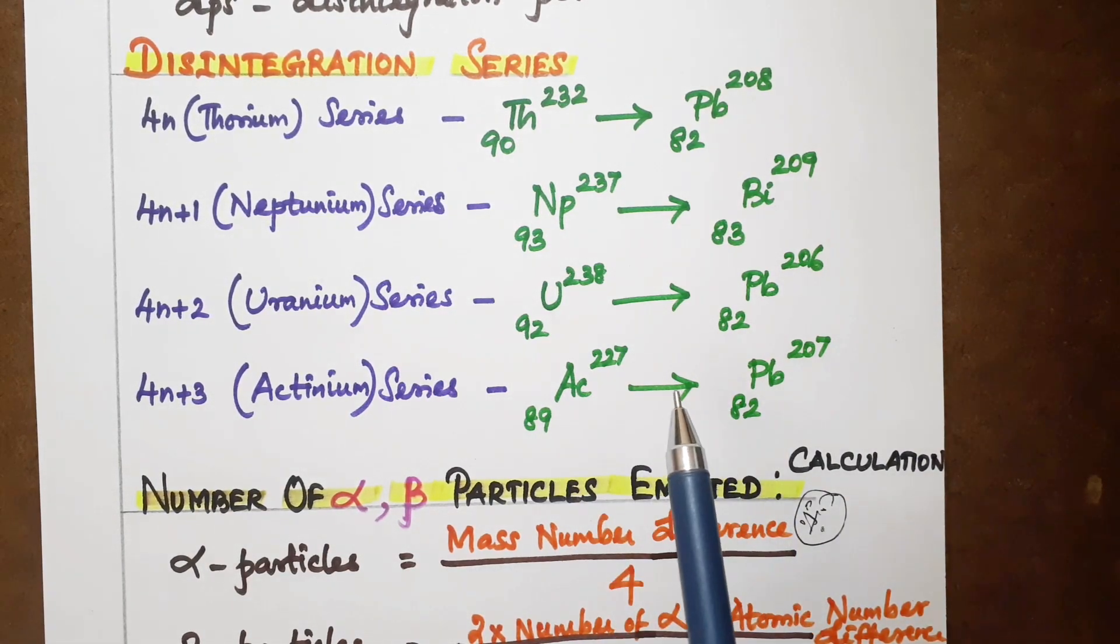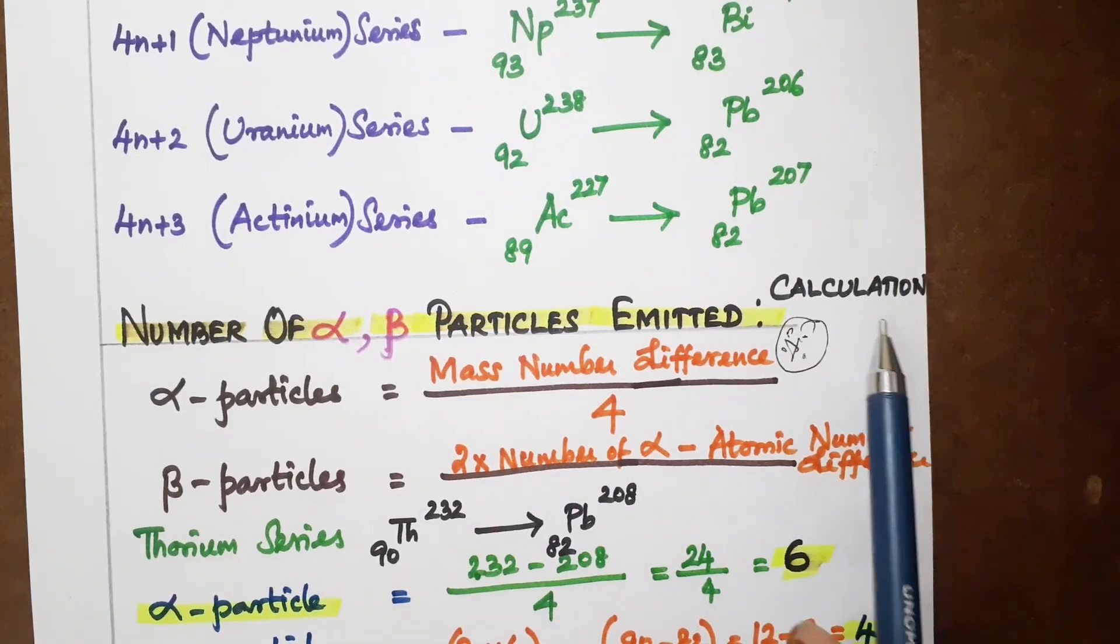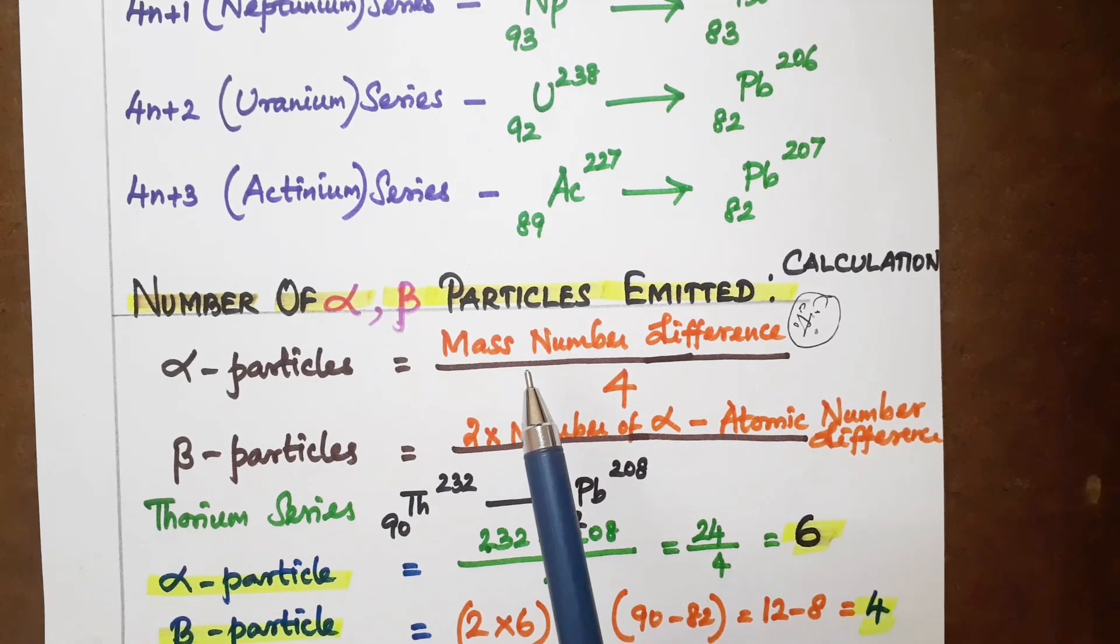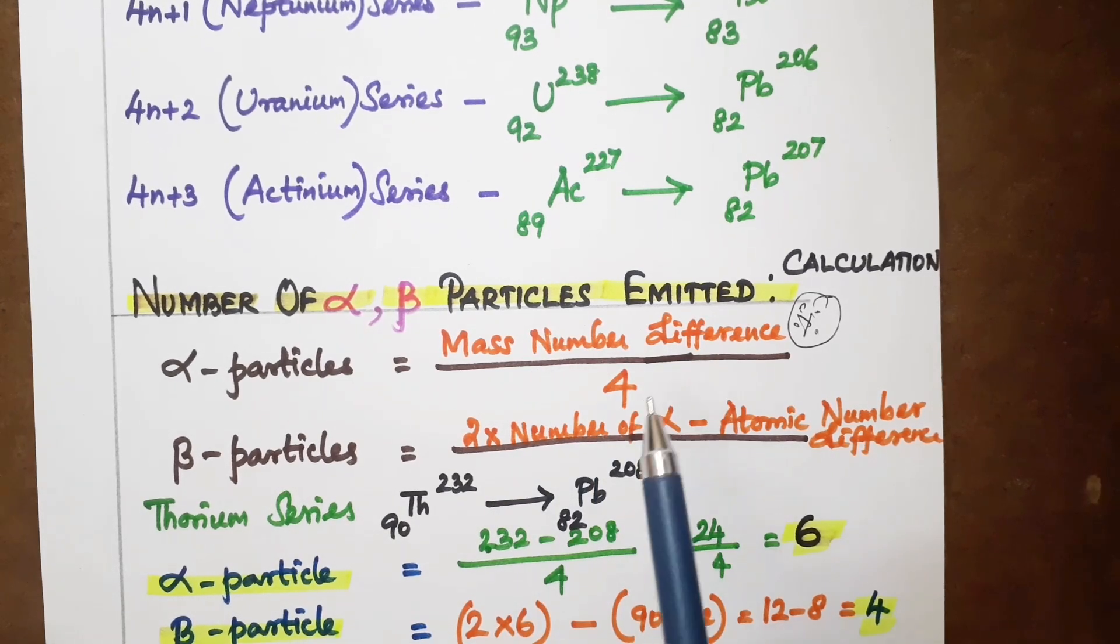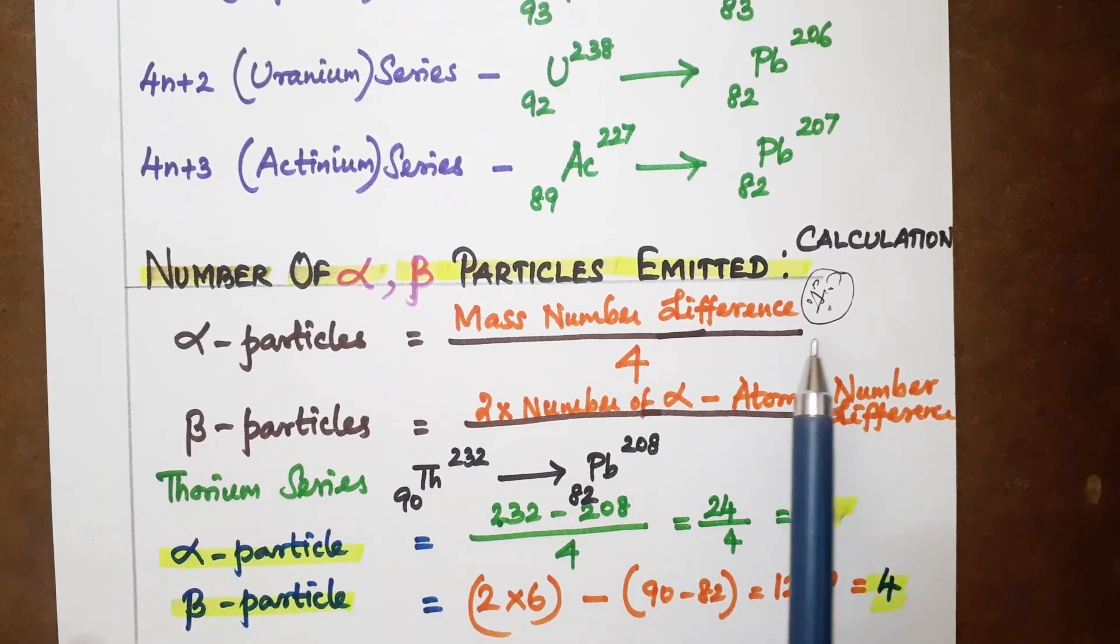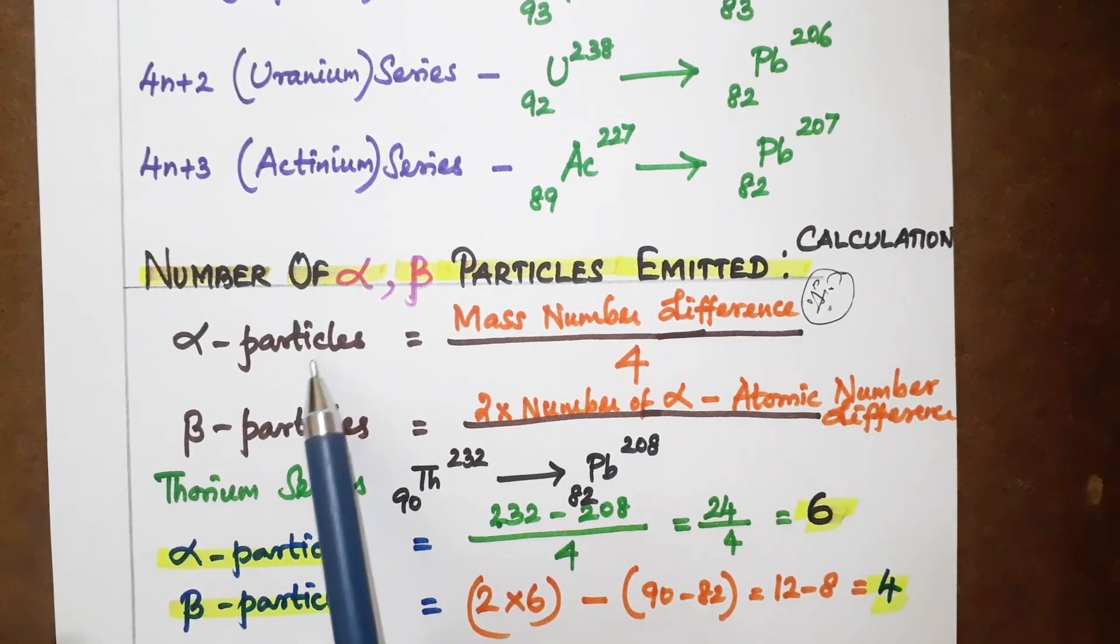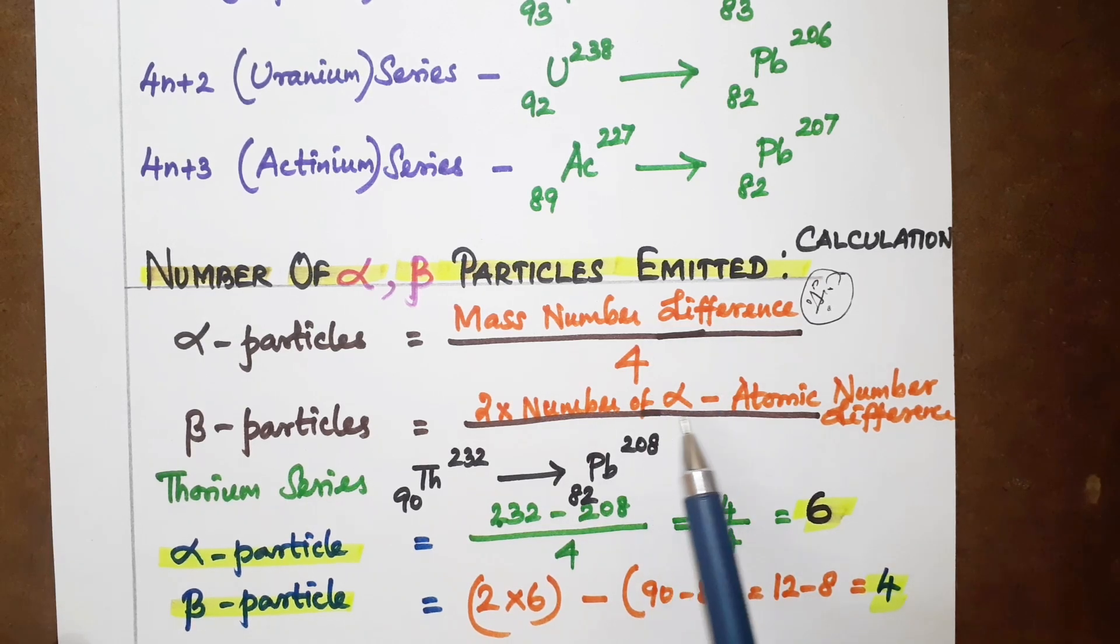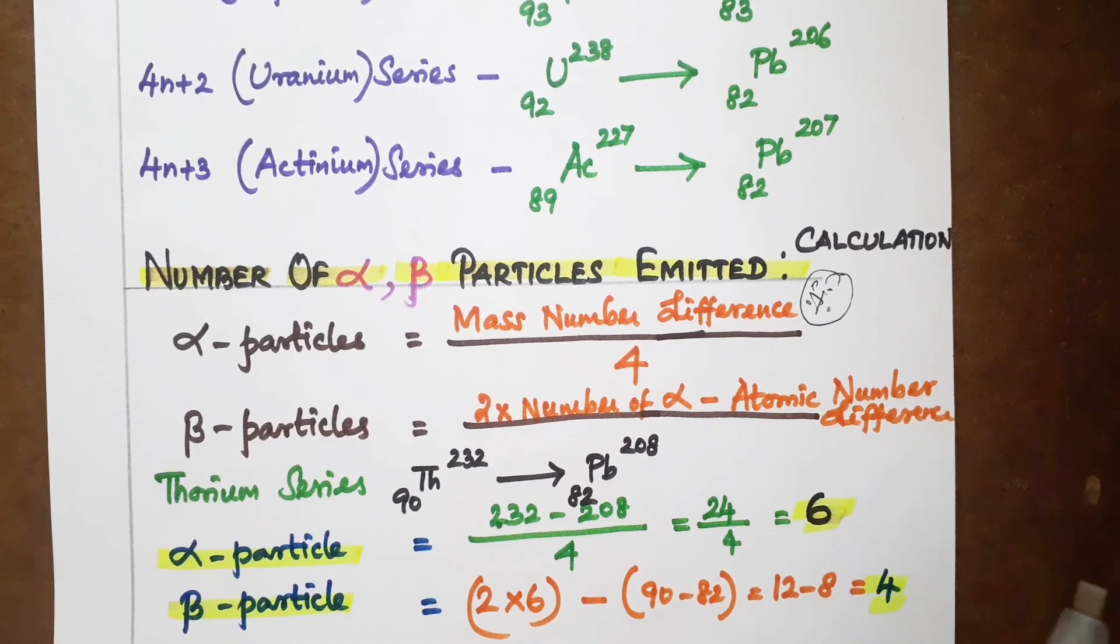Calculation method for disintegration series. For alpha particle emitter: mass number difference divided by 4. For beta particle emitter: 2 times number of alpha particles minus atomic number difference. This is the formula.